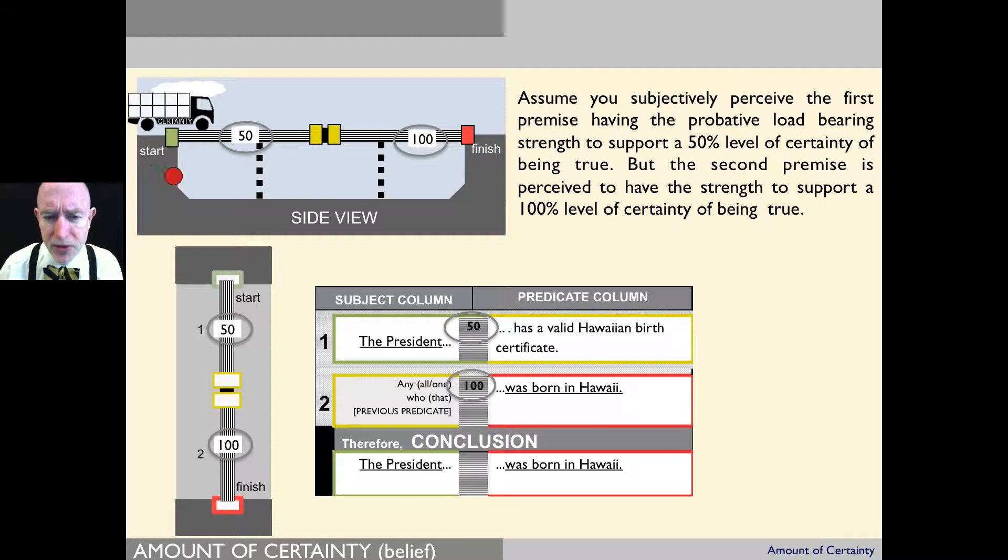Just as a review, here we have the logic bridge template and we've got two premises. The president has a valid Hawaiian birth certificate, and anyone who has a valid Hawaiian birth certificate was born in Hawaii. Therefore, our conclusion is that the president was born in Hawaii.